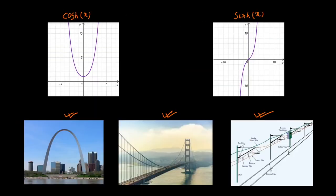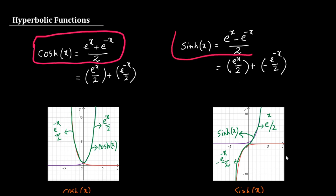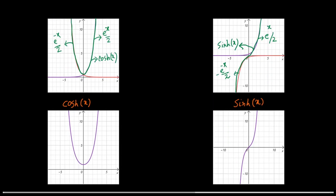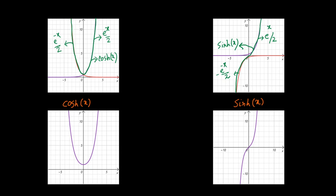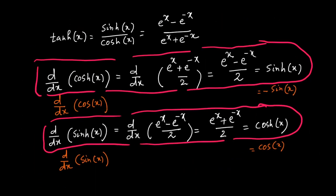So to summarize: we defined hyperbolic functions, saw their graphs, established basic relationships between circular and hyperbolic functions, derived the identity cosh²(x) - sinh²(x) = 1, and found the derivatives of hyperbolic functions. These results will be greatly effective in solving many problems. I hope you will be able to solve problems involving hyperbolic functions very easily. See you in the next video. Take care.